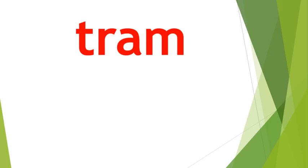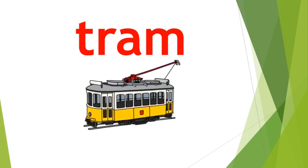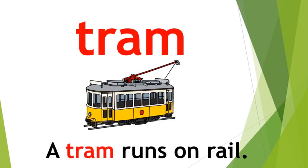Let's see how a tram looks. This is a tram. It doesn't need fuel to run — it runs on electricity. Let us use the word tram in a sentence. We can use it in a sentence like: a tram runs on rail.